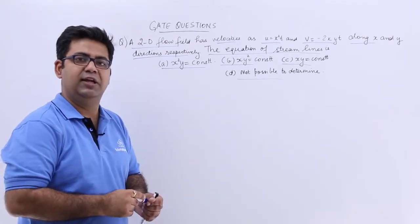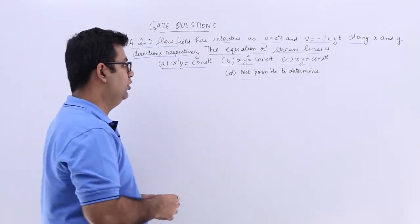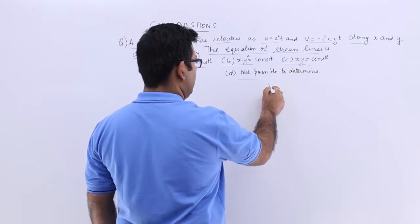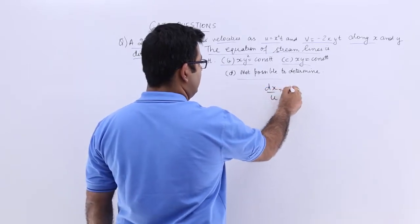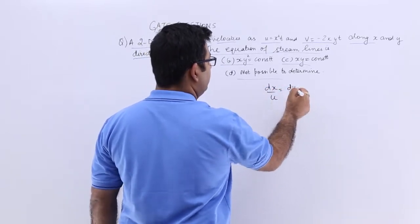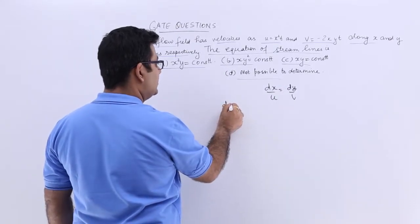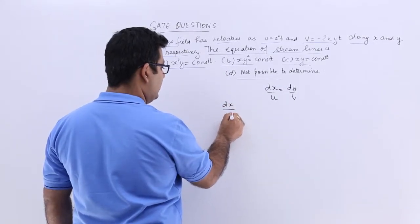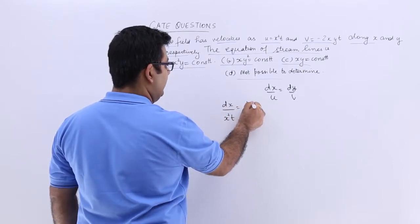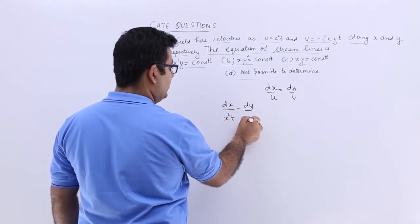Now for a streamline, the equation we all know what it is. So it is dx upon u is equal to dy upon v. Let's put u and v over here. You will have dx upon x squared t is equal to dy upon minus 2xy t.